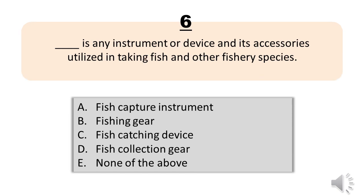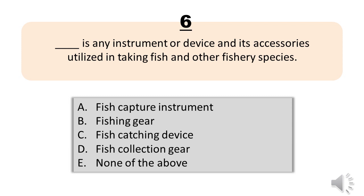Number 6. Blank is any instrument or device and its accessories utilized in taking fish and other fishery species. A. Fish capture instrument. B. Fishing gear. C. Fish catching device. D. Fish collection gear. E. None of the above. The correct answer is Letter B. Fishing gear.